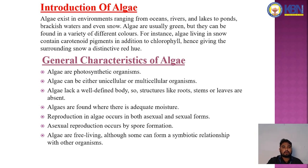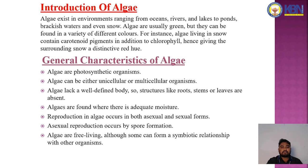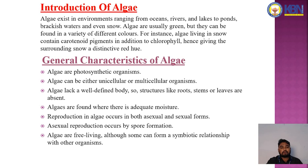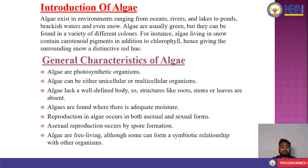The general characteristics of algae: algae are photosynthetic organisms. Algae can be either unicellular or multicellular. Algae lack a well-defined body structure like roots, stems, or leaves. Algae are found where there is adequate moisture. Reproduction in algae occurs in both asexual and sexual forms. Asexual reproduction occurs by spore formation. Algae are free living, although some can form a symbiotic relationship with other organisms.